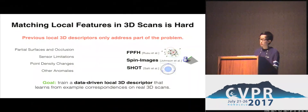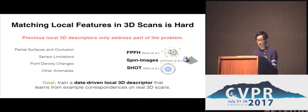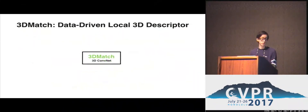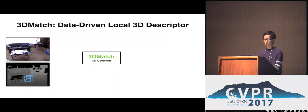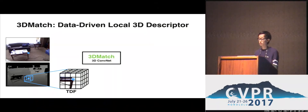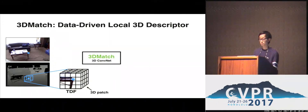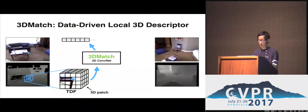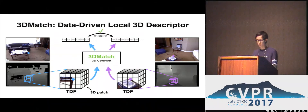In the face of these drawbacks, the goal of our paper is to train one of the first data-driven local 3D descriptors. By learning from example correspondences on real 3D data, we can train a descriptor to address all of the aforementioned challenges. We present 3D Match, using a 3D ConvNet. Given an interest point on a 3D surface, we take the local volumetric region and convert it into a 3D voxel grid called TDF, where every voxel represents its distance to the nearest surface. This local 3D patch is fed into 3D Match to compute a feature descriptor vector, and more similar descriptor vectors indicate likely correspondences.